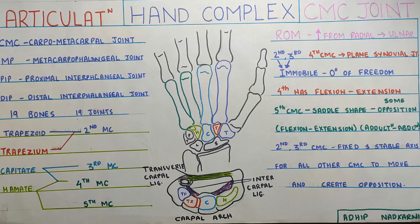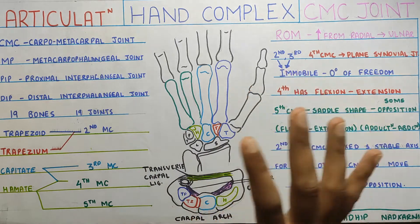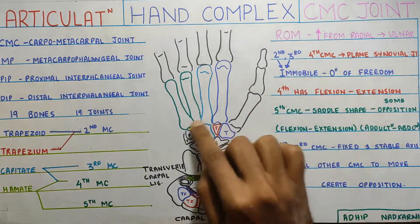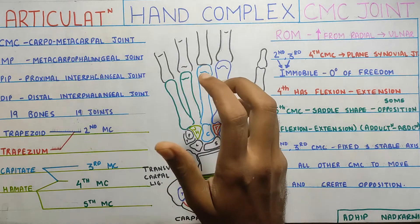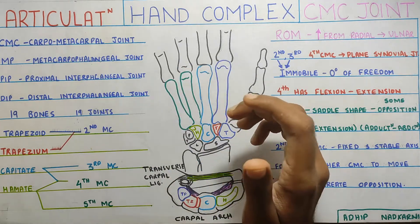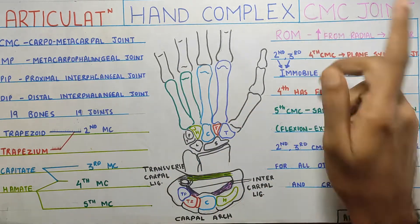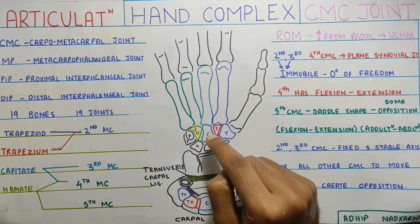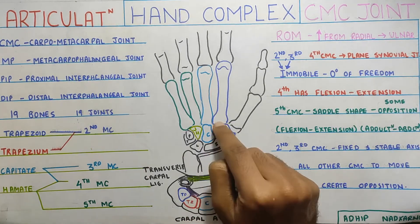In this video, we are going to talk about the hand complex. We are finished with the wrist joint. Now we will be moving to the hand and in this video, we will be talking about the carpo-metacarpal joint — that is the joint between the carpals and the metacarpals.